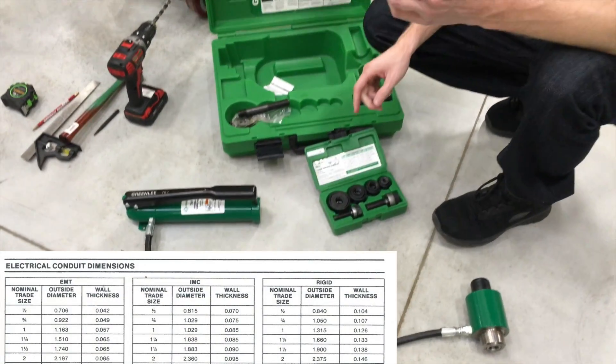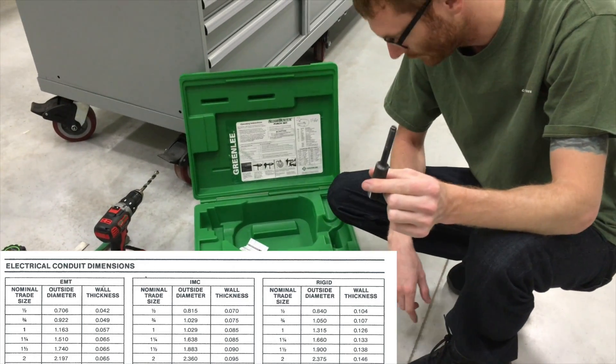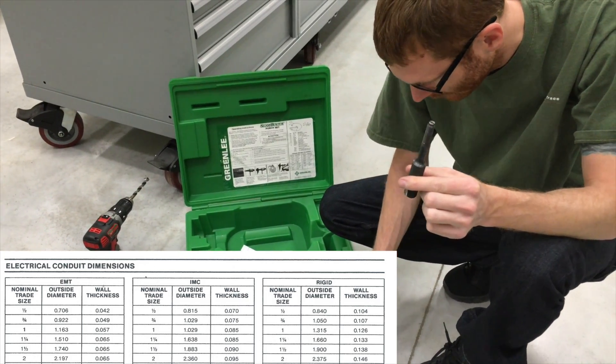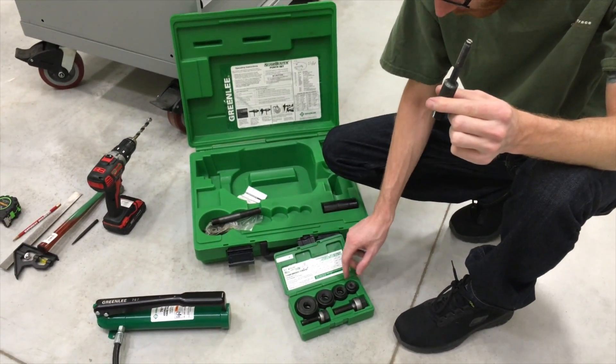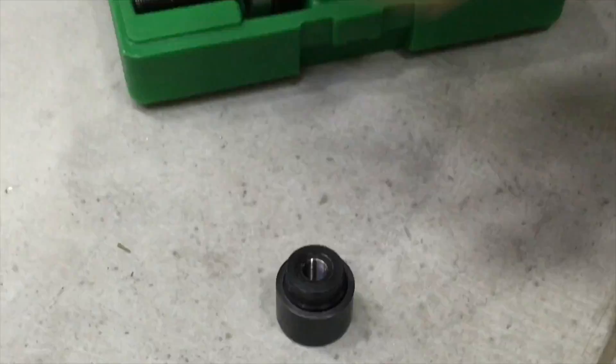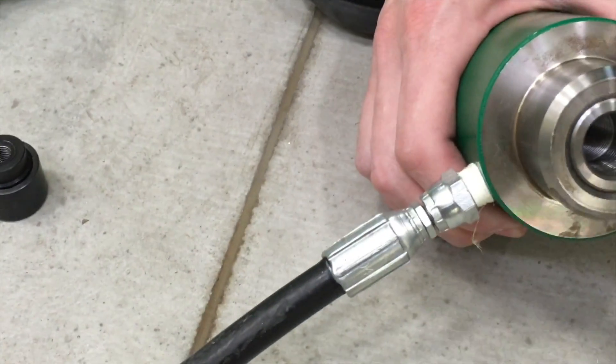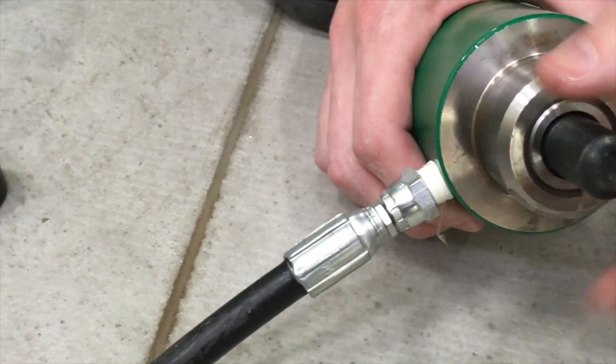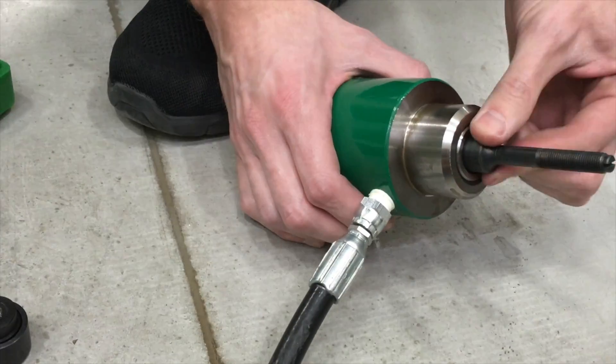Because we drew the 3-8 hole, we're going to start with this adapter shaft here. And we're going to start with, out of the four of these, the smallest one here uses the 3-8 thread. So this shaft here will come into our cylinder here. And you thread that all the way in. So that's ready to go.